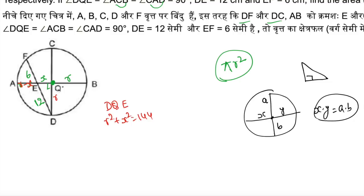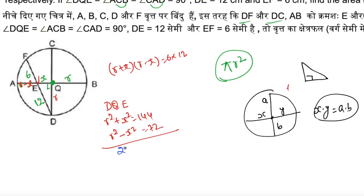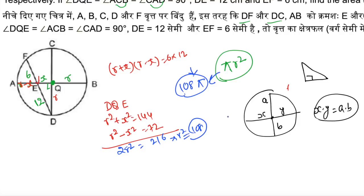This follows from Pythagoras. Now applying the chord product theorem at point E: the right-hand side is R plus X, the left-hand side is R minus X, and the top and bottom give 6 times 12. So R squared minus X squared equals 72. Adding both equations: 2R squared equals 144 plus 72, which is 216. So R squared equals 108. The area is therefore 108π.